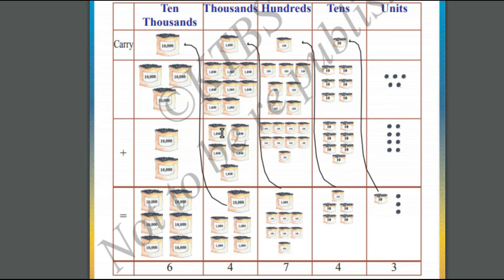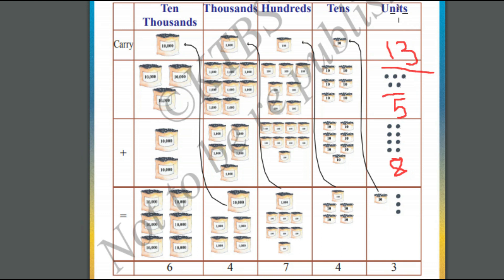Let us add these two numbers. In the units place of the first number, we have got 5 beads. In the units place of the second number, we have got 8 beads. 8 plus 5 is equal to 13. We cannot represent 13 in the units place. So we will rewrite this as 10 plus 3. We will carry 10 to the tens place, and we will write 3 in the units place.